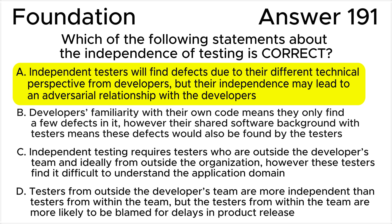All the rest of the answers are wrong. Answer B is incorrect. A developer's familiarity with the code does not mean that they rarely find defects in it. Instead, this familiarity means they can efficiently find many defects in their own code. Rather than developers and testers having a shared background, developers having a different background to testers is normally cited as the reason that testers and developers find different kinds of defects.